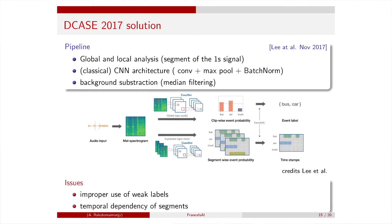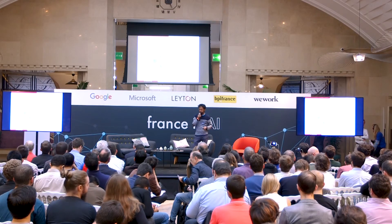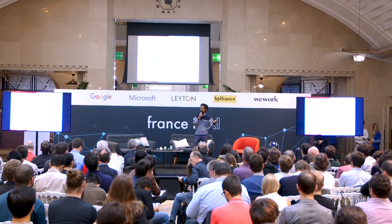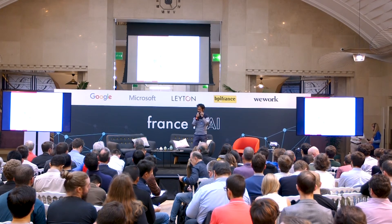An example solution for this task is based on a classical convolutional network architecture with ConvNet, max pooling, and batch normalization. The proposed approach analyzes the signal both globally by looking at the full signal and locally by looking at one segment, combining outputs from both paths to predict the presence of a label — like a car or bus in the clip — and also at which time these sounds are occurring. However, there are still issues: weak labels are not fully utilized in the model, and there is no temporal dependency between segments taken into account.